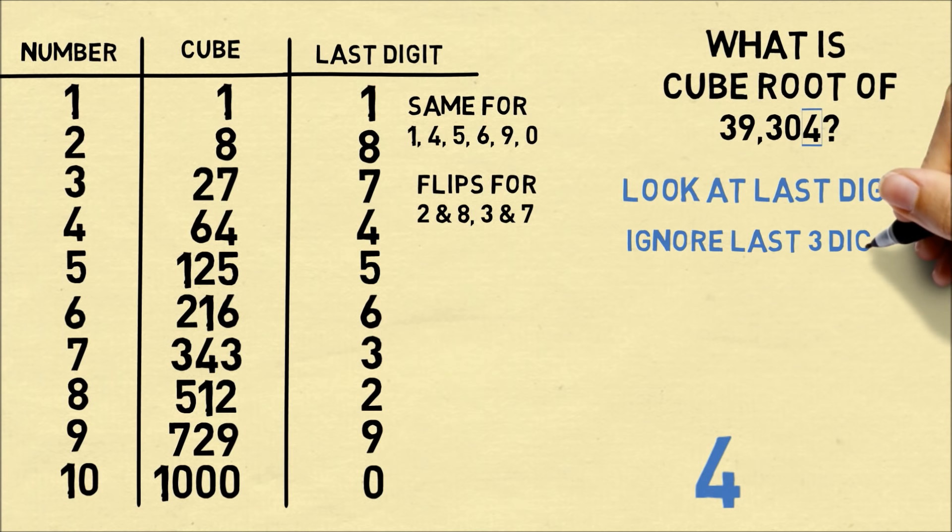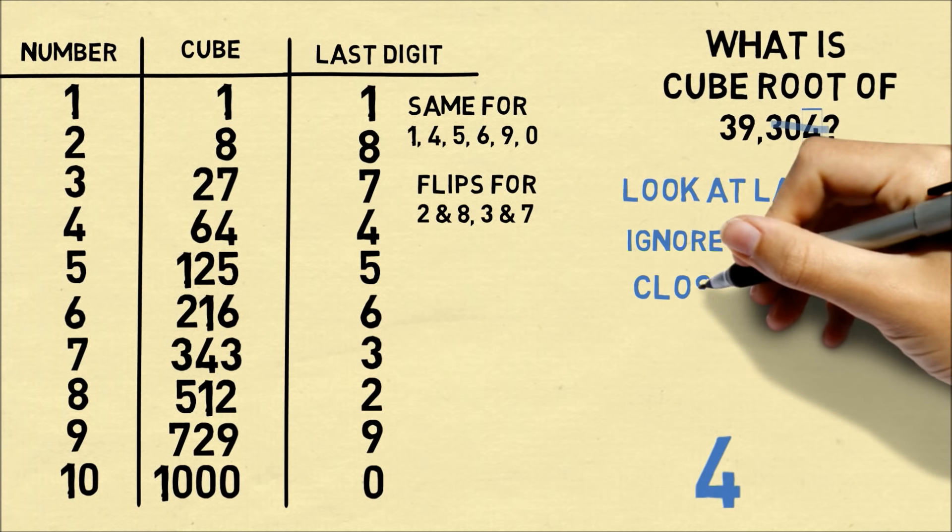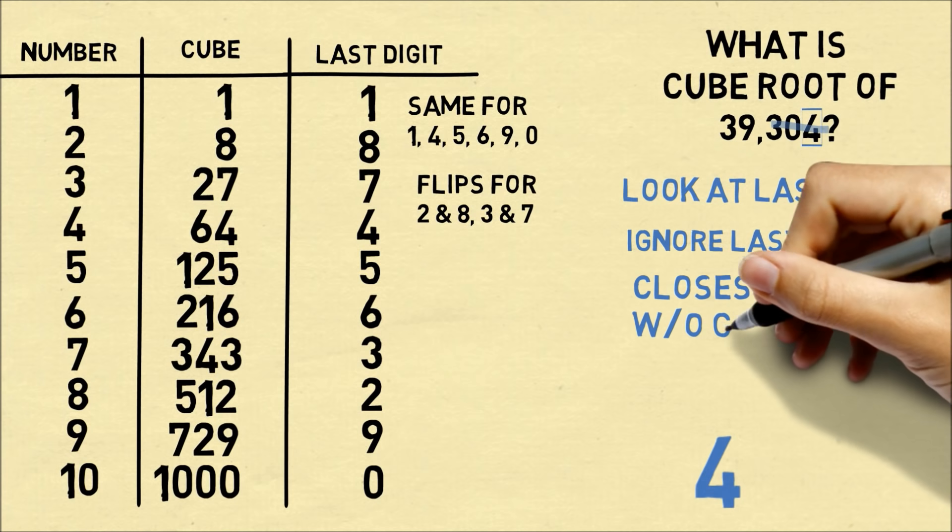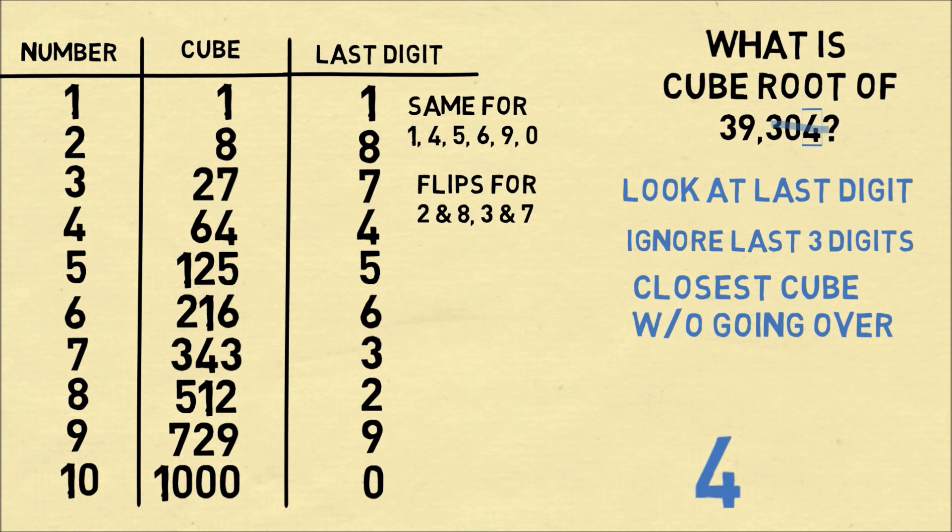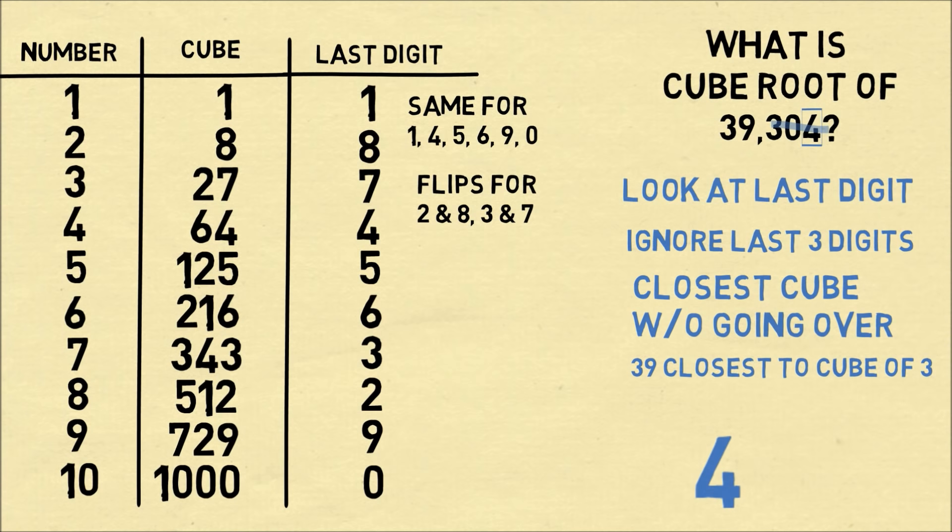The next step is we ignore the last 3 digits of our number. So in 39,304, we're going to just ignore the 304. Now we want to find the closest cube without going over. So 39 is between 27 and 64. It's actually closest to 27 without going over, which means it's closest to the cube of 3.